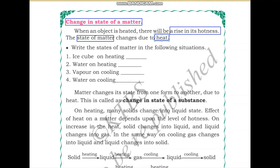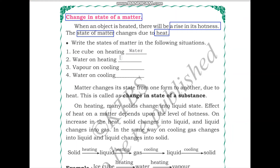Write the states of matter in the following situations. Ice cube on heating — when you keep an ice cube at room temperature, it is going to melt and become water. So ice cube on heating becomes water. What is going to happen to water on heating? Water on heating becomes water vapor or steam.